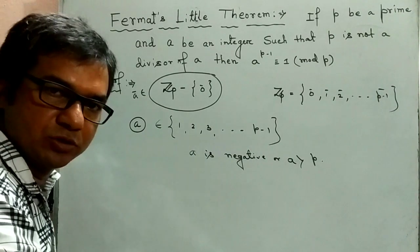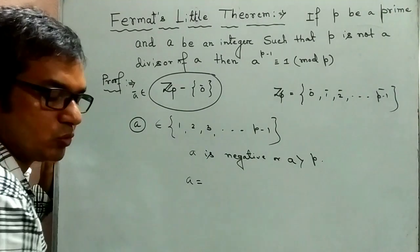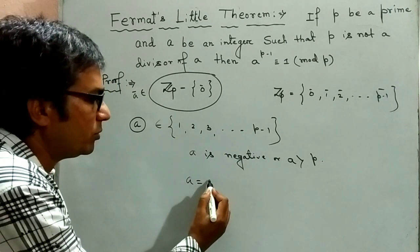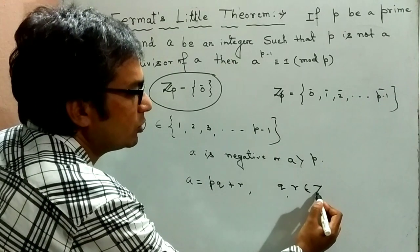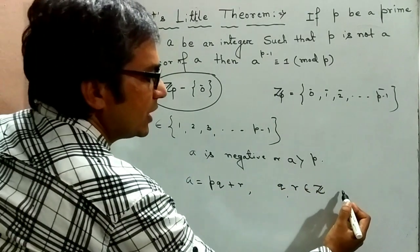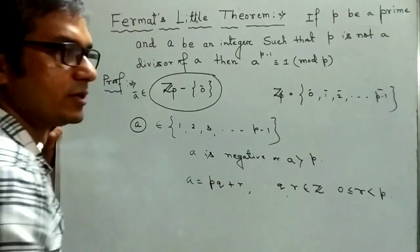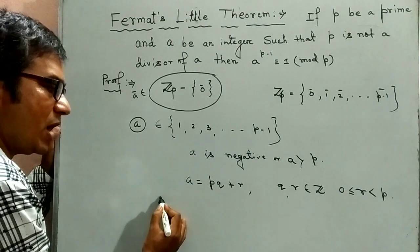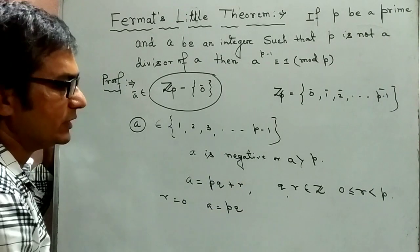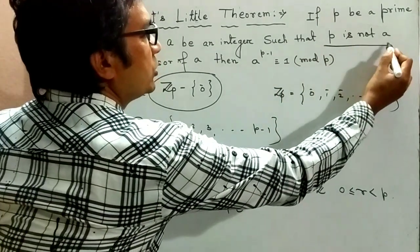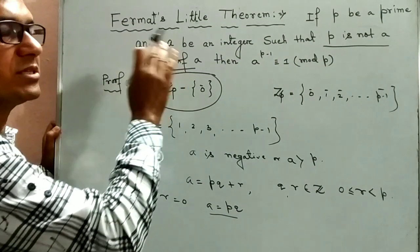Then by division algorithm, we can write a equal to p into q plus r, where q and r belongs to Z. And the restriction of r is 0 less than or equal to r less than p. If r equal to 0, then a equal to p into q. Then this is not true. Because in this case, p is a divisor of a. But from the hypothesis, we say that p is not a divisor of a.